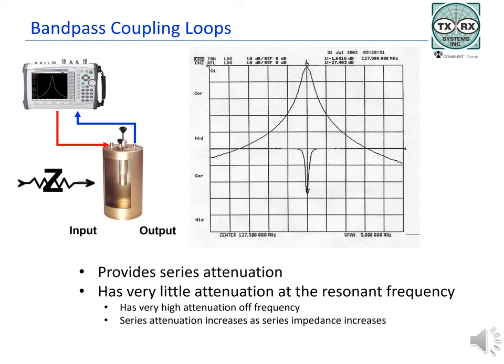The cavity at its center or resonant frequency will have an impedance of 50 ohms, and the impedance will increase at frequencies further from the center. While some of the unwanted energy is absorbed by the cavity, most of it will be reflected back to the source due to the impedance mismatch off center frequency. The response curve shown indicates that the cavity and loops have 1.69 dB of insertion loss on the upper graph and 27.40 dB of return loss on the lower graph. The loss of the cavity increases on either side of the center frequency.